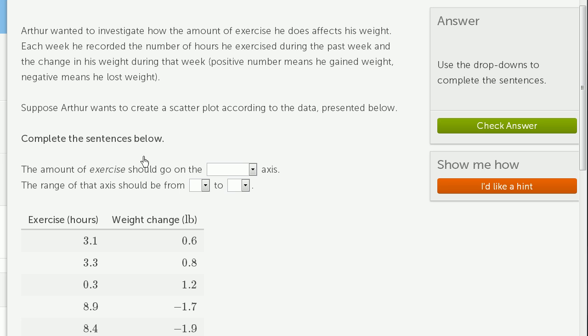Complete the sentences below. The amount of exercise should go on the horizontal axis. We want to put the driving variable on the horizontal axis and the dependent variable on the vertical axis. The amount of exercise is what drives, or in theory drives, his weight gain or weight loss. We want to put exercise, the thing that might be driving the other variable, on the horizontal axis.